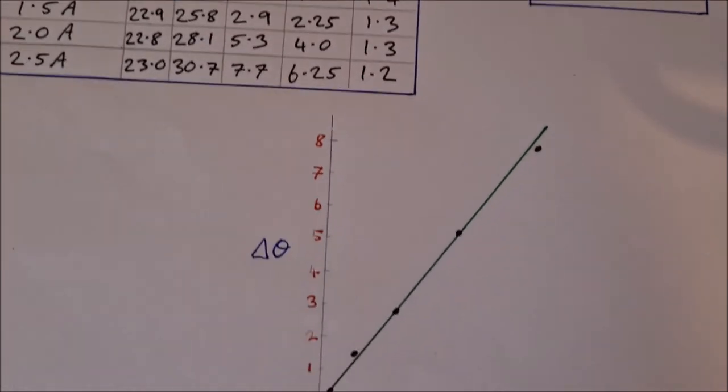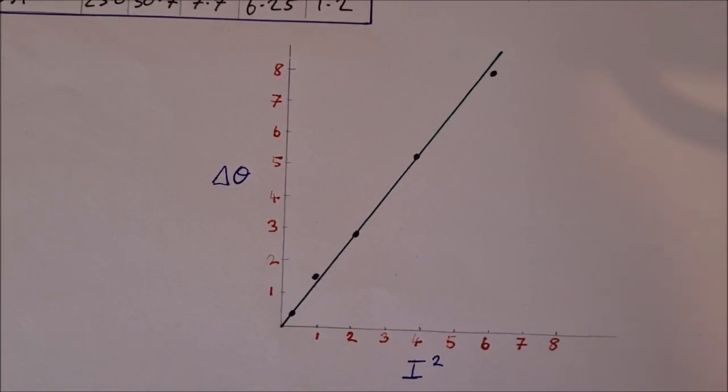You can also verify Joule's Law by drawing the graph. So here we draw the graph of I squared against delta theta. And you can see that we've plotted in the points here. And the line of best fit is a straight line through the origin, which verifies that delta theta is proportional to I squared.